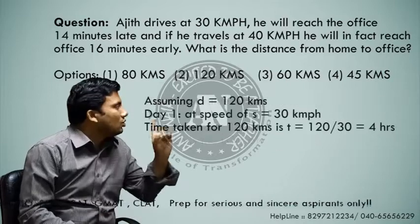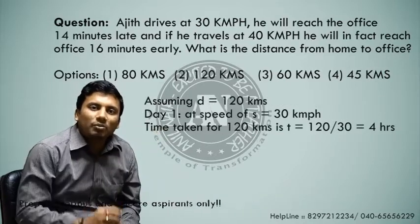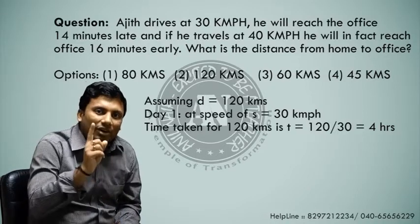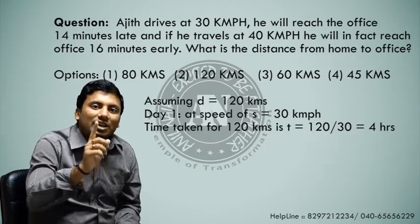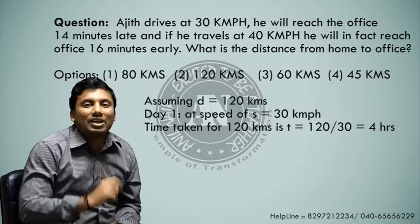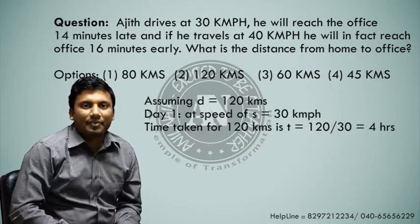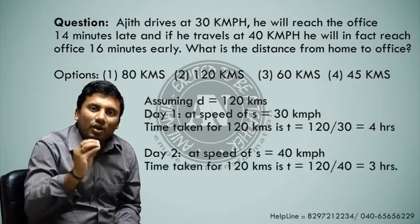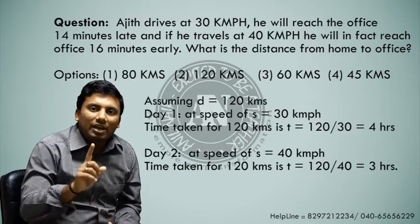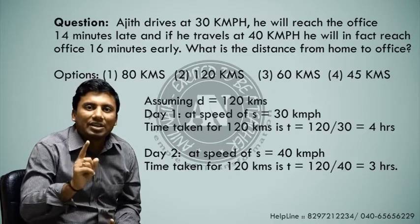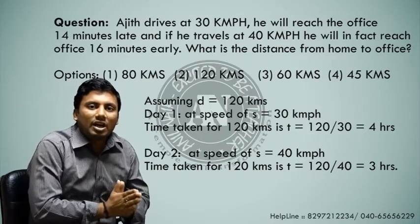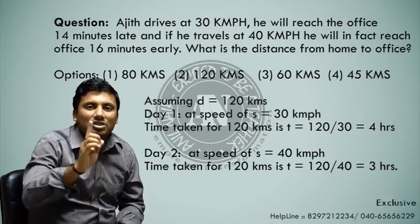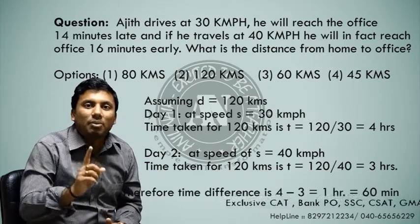I assumed the distance to be 120 kilometers. On day 1, he travels at 30 kmph, meaning for one hour he travels 30 kilometers — so to travel 120 kilometers he takes 4 hours. On the second day, he travels at 40 kmph, meaning 40 kilometers per hour — so to travel 120 kilometers he takes 3 hours. The difference in time periods is 4 hours minus 3 hours, which is 1 hour.